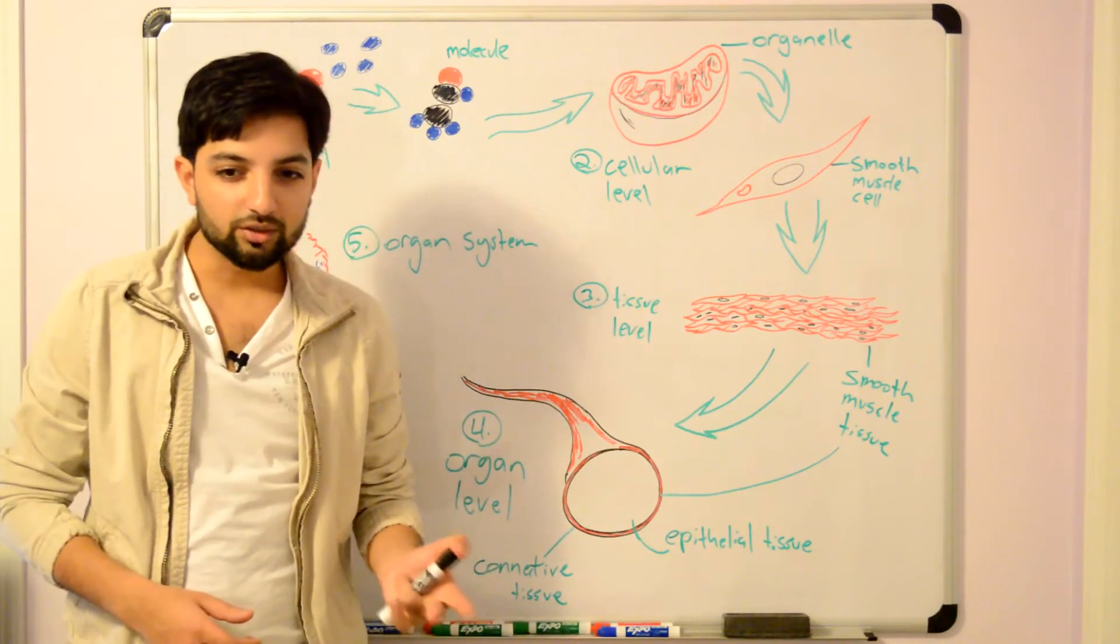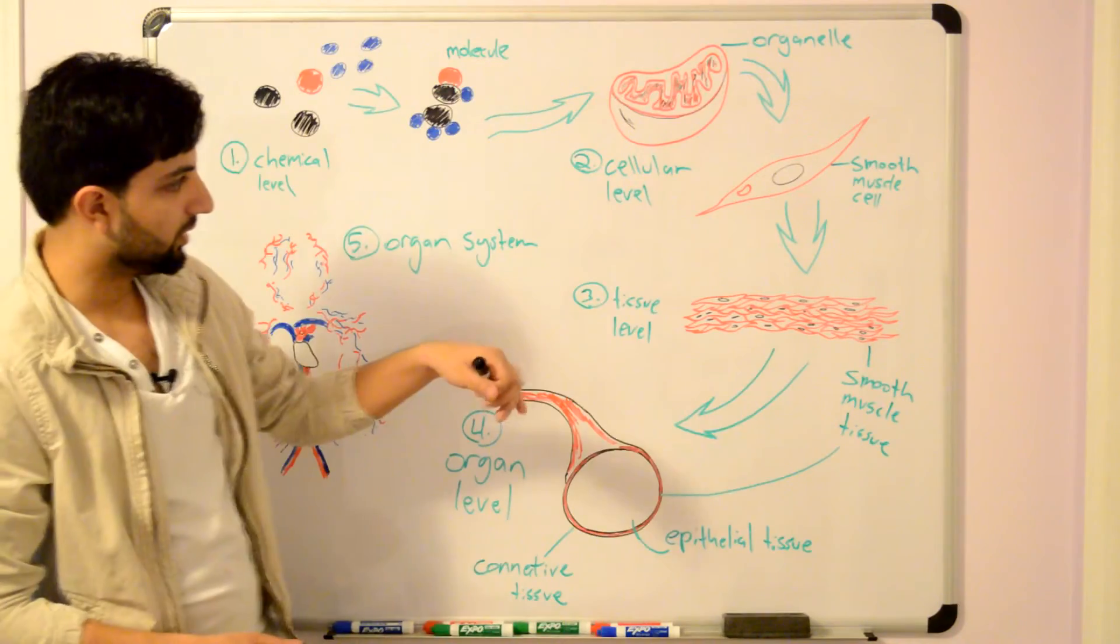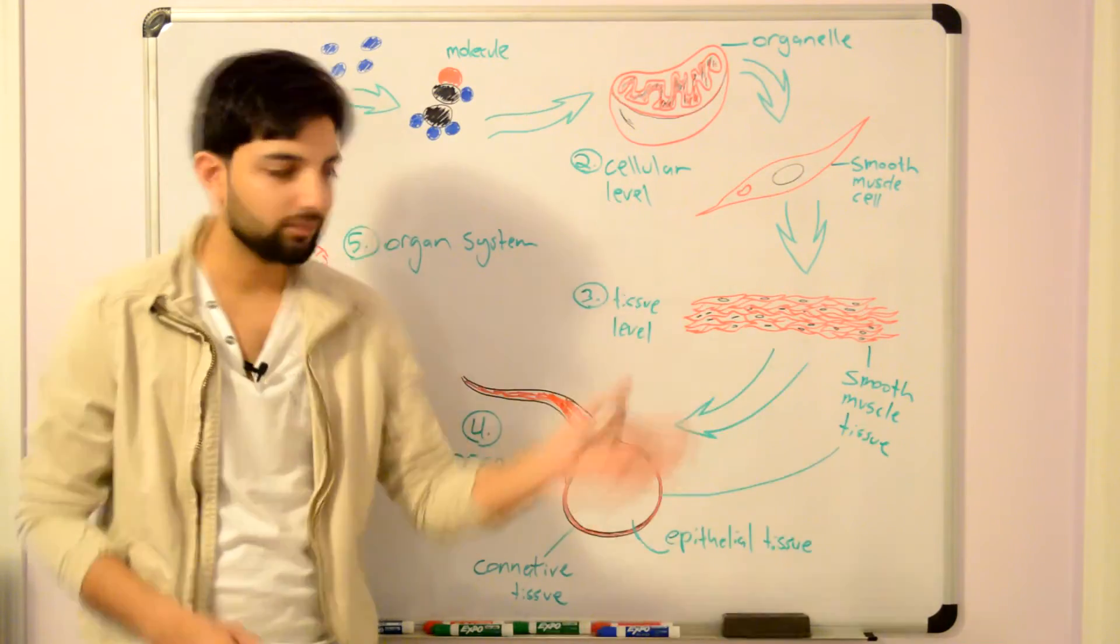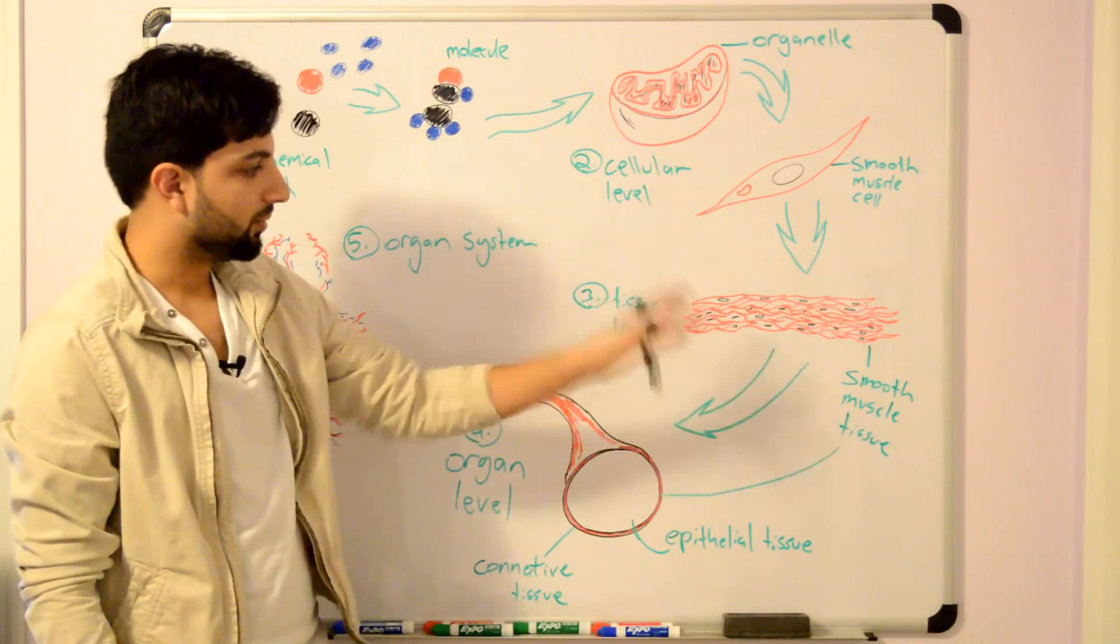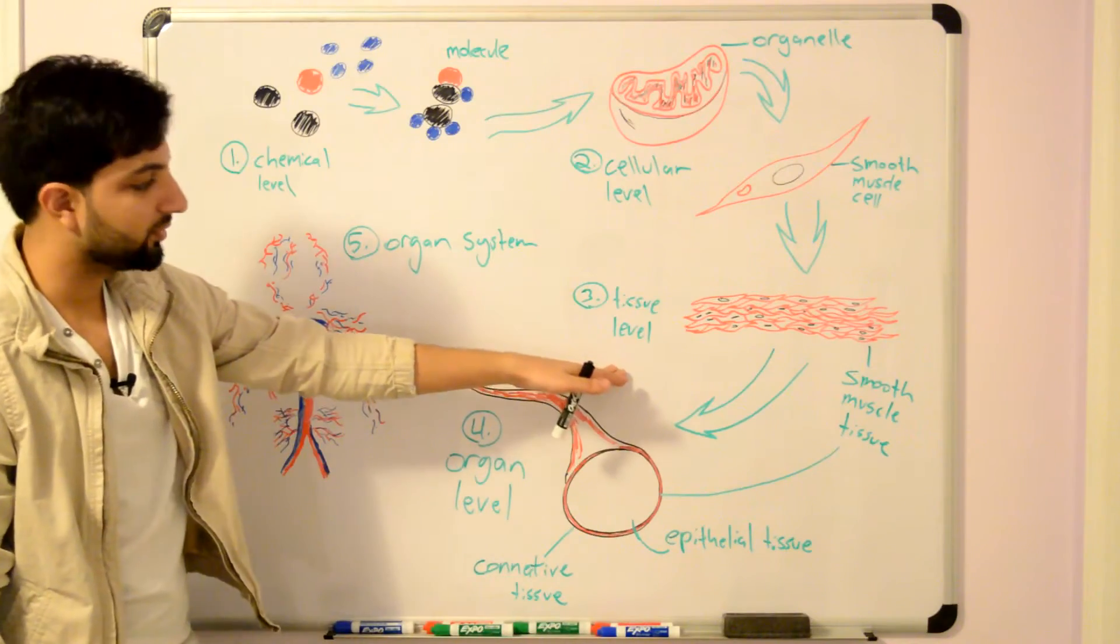In complex organisms, the hierarchy continues. In simple organisms like bacteria, you can stop right here, but we're talking about complex organisms. So we continue on to the tissue level.